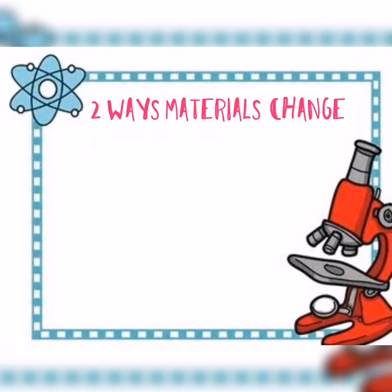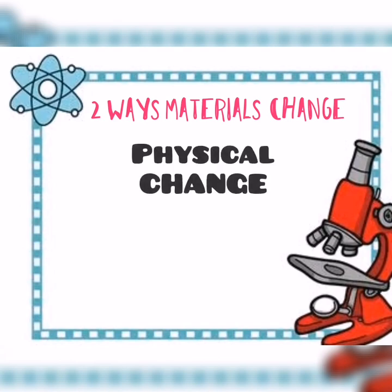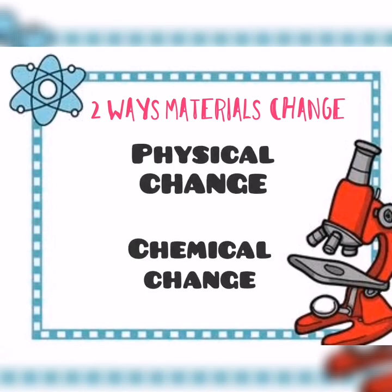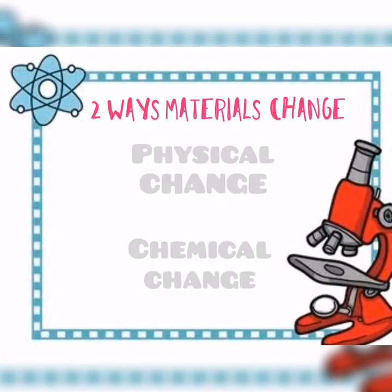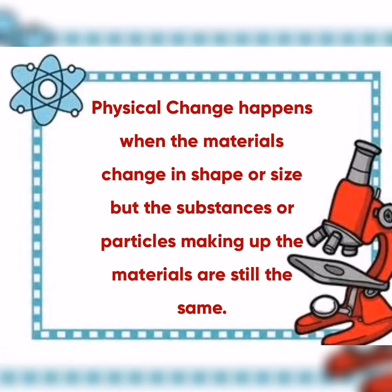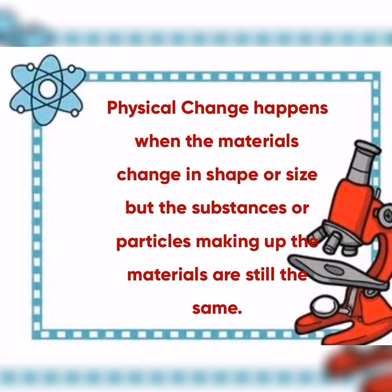There are two ways how materials change. Number one, the physical change, and number two, the chemical change. Physical change happens when the materials change in shape or size, but the substances or particles making up the materials are still the same. These changes are directly observed when you cut or slice an apple — there are changes in shape and size, but the materials are still the same.